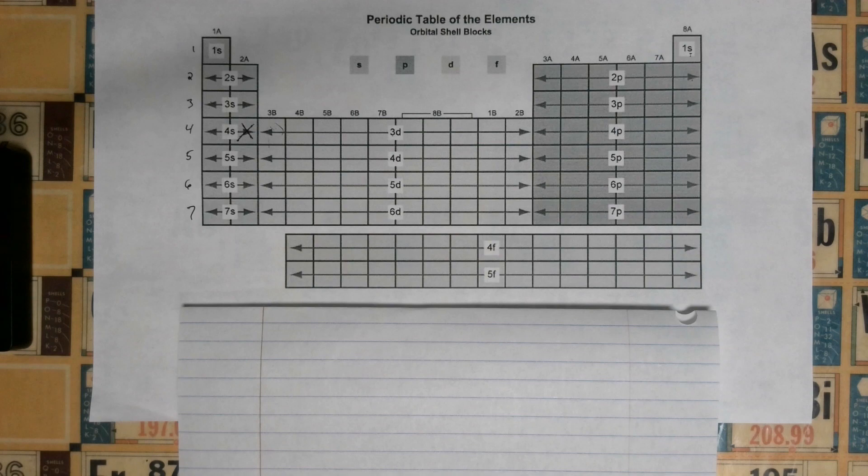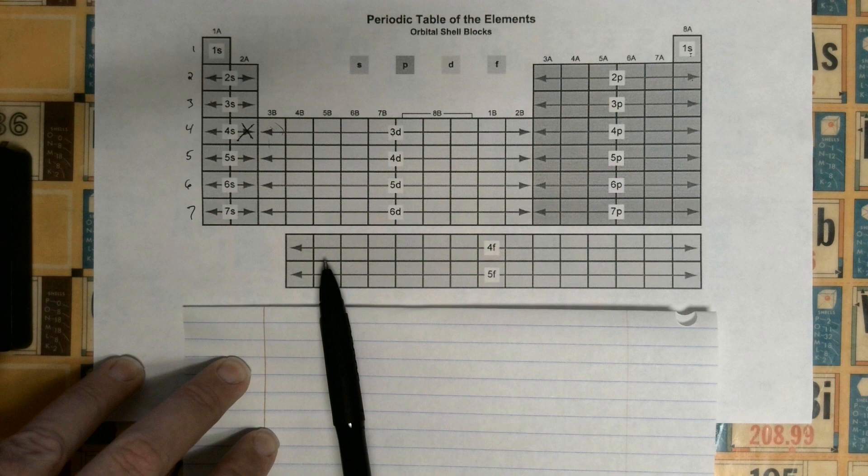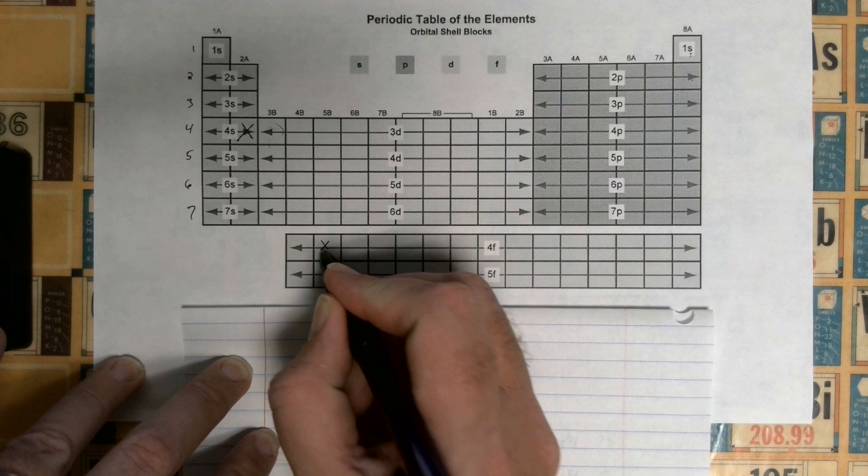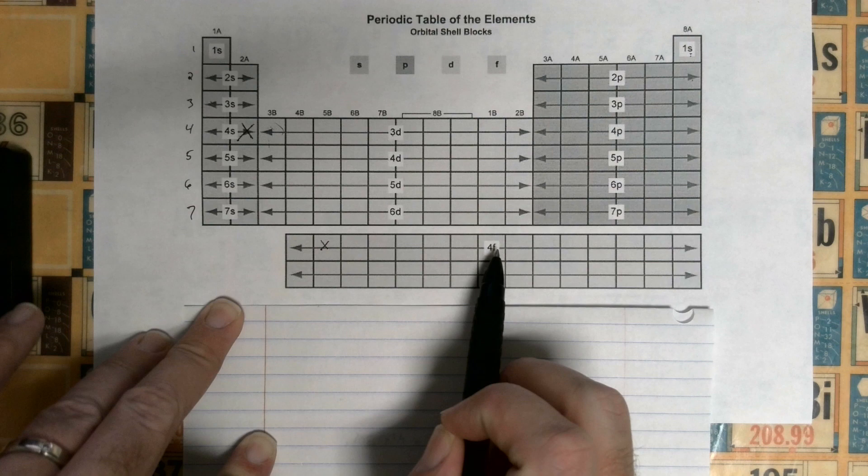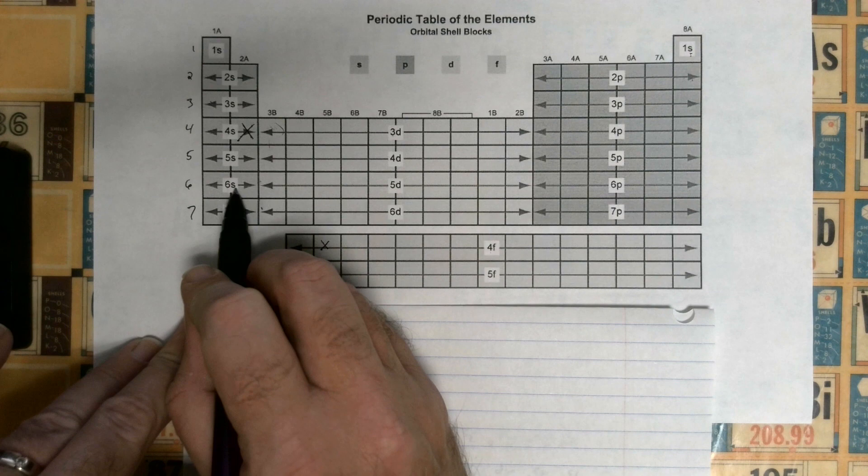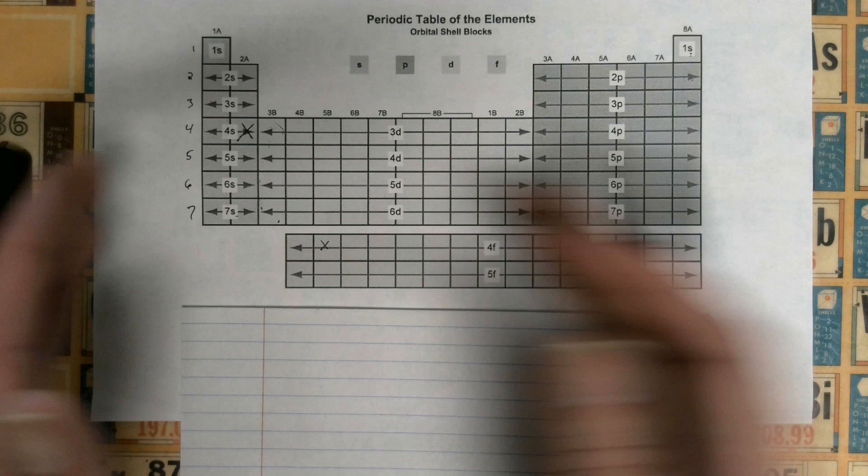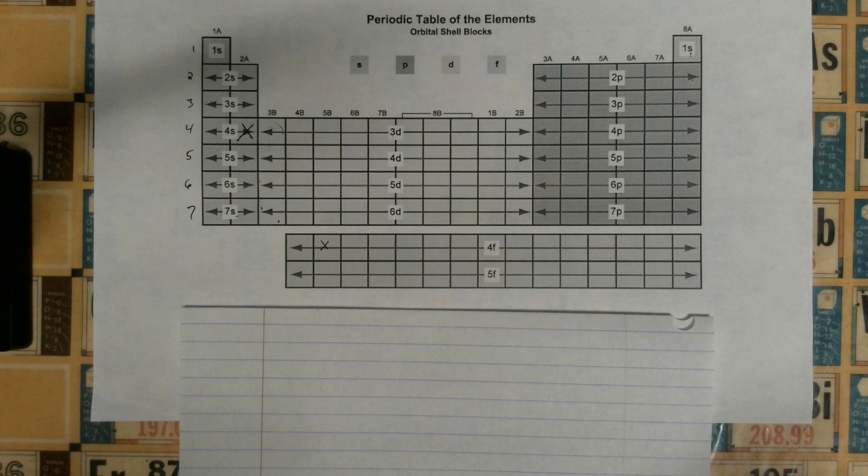So if we have an element like this one right here, this is number 59, or 58 depending on which periodic table you're looking at. We know that it's in the 4f. These two rows actually fit right here between the 6s, 5d, 7s, 6d. We could actually pull this periodic table apart and squeeze this right in here between these two sections.